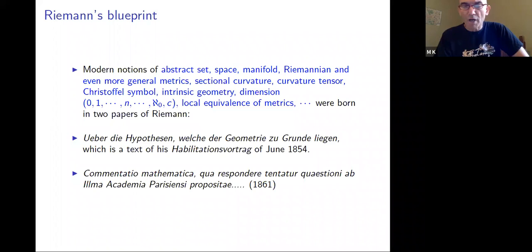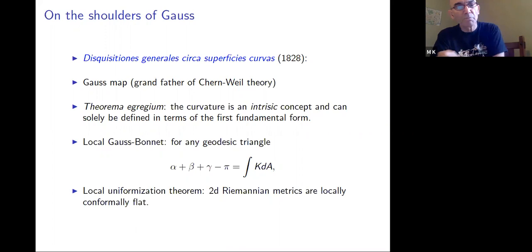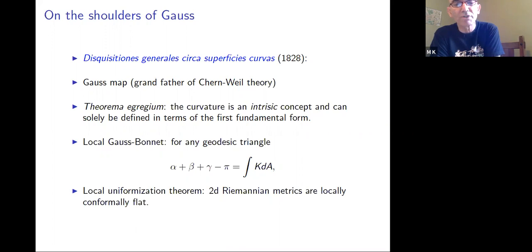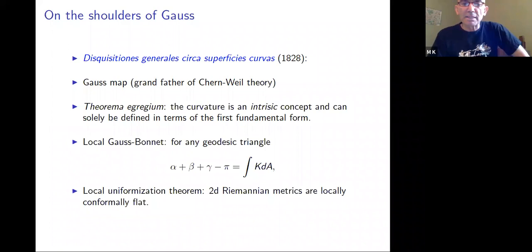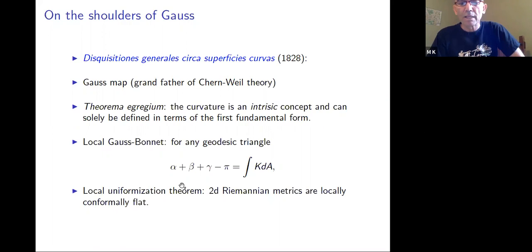Riemann himself built his theory on the shoulders of Gauss. He extended Gauss's material vastly, but the first giant step was taken by Gauss. I listed these issues that Gauss struggled with and his major breakthroughs. Amazingly, all of these steps are still with us and are used in current work — one way or another — in curvature in the noncommutative setting.